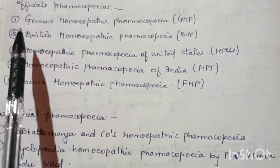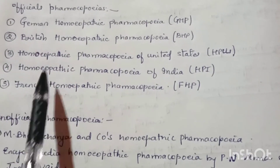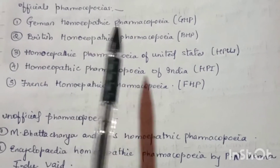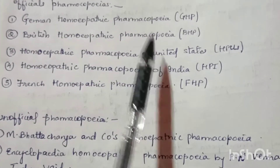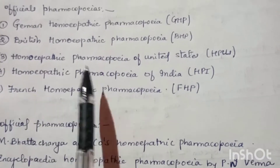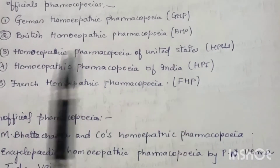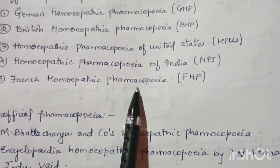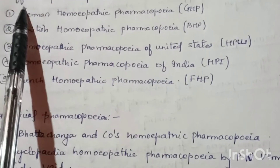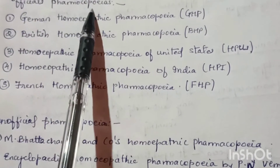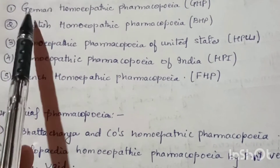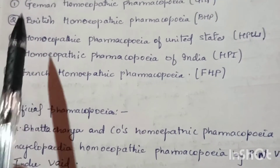There are five official pharmacopoeias: German Homeopathic Pharmacopoeia, British Homeopathic Pharmacopoeia, Homeopathic Pharmacopoeia of United States, Homeopathic Pharmacopoeia of India, and French Homeopathic Pharmacopoeia. These are officially published by the government of particular countries.